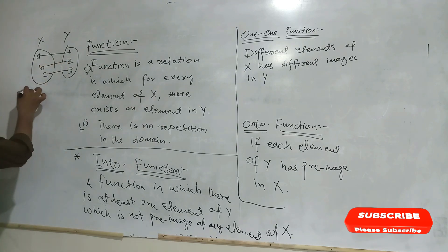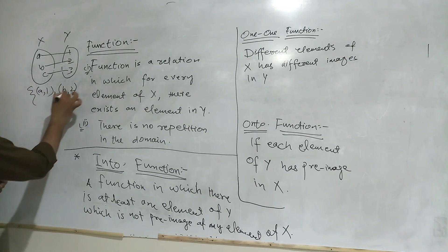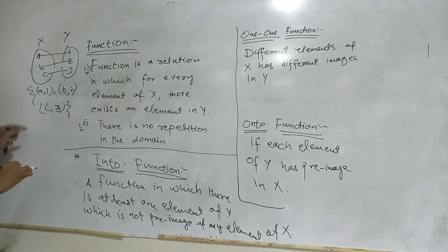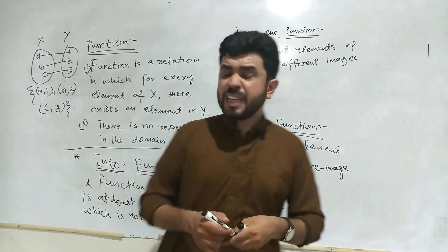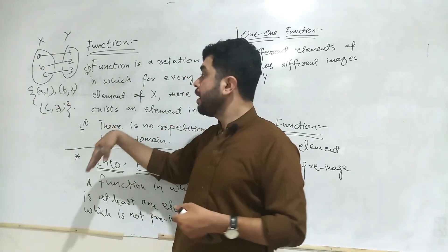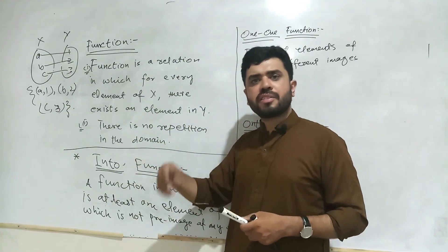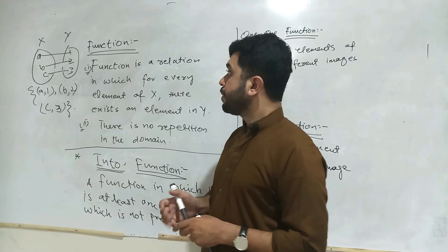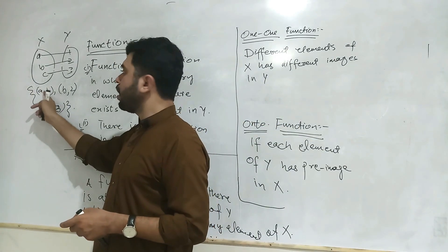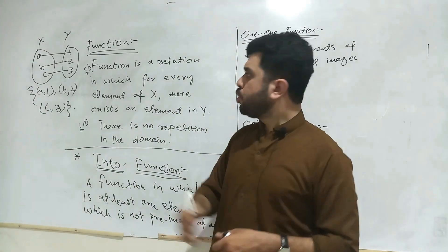If I write it as ordered pairs it becomes (A,1), (B,2), (C,3). For every element in X there exists an element in Y. A function is also a relation, but the second condition — no domain repetition — is not necessary for a relation. If the domain repeats it is still a relation; if it does not repeat it is also a relation. The first element, or input, is called the domain, also known as the pre-image.